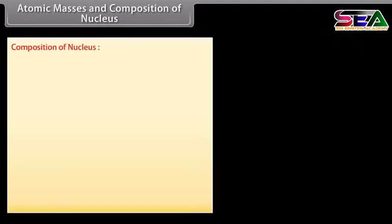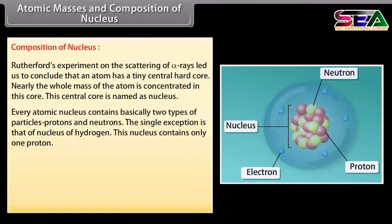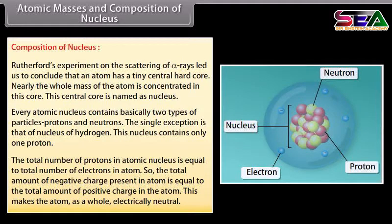Composition of nucleus: Rutherford's experiment on the scattering of alpha rays led us to conclude that an atom has a tiny central hard core. Nearly the whole mass of the atom is concentrated in this core, which is named the nucleus. Every atomic nucleus contains basically two types of particles: protons and neutrons. The single exception is the nucleus of hydrogen, which contains only one proton. The total number of protons equals the total number of electrons, making the atom electrically neutral.